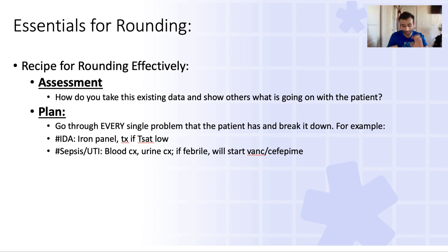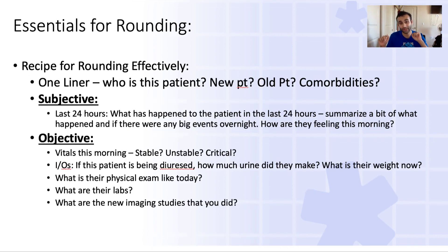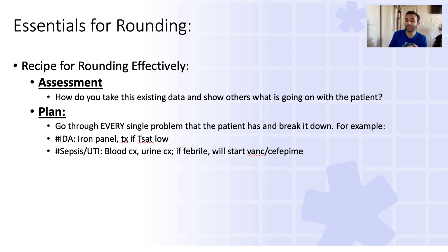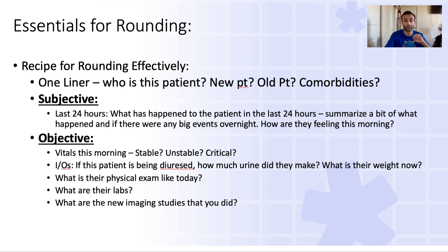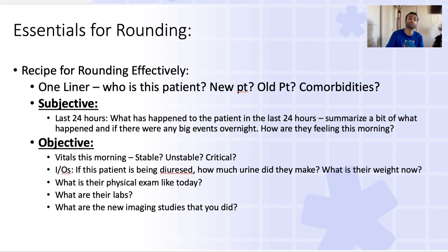Lastly is the assessment and the plan — probably the most important aspects of rounding. The assessment takes everything and puts it together: the subjective data and the objective data. For example, let's say there's a 37-year-old who came in because we were worried about endocarditis. Yesterday we saw that he had a fever, Osler's nodes on exam, and a murmur on auscultation. Because of that we got a TTE, which confirmed endocarditis on the mitral valve. We then consulted ID to figure out the best antibiotics, and the blood cultures are growing X, Y, and Z. The assessment puts together the patient's subjective feelings with the objective data — fever, blood cultures, vital signs, and physical exam — painting a picture of what the patient has.